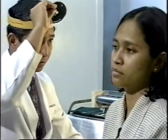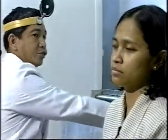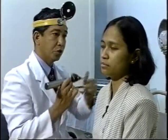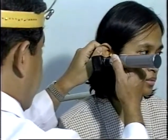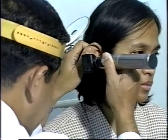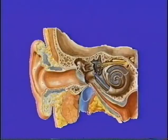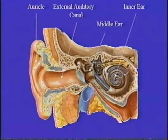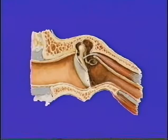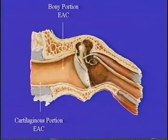After inspection of the outer portion of the ear, we proceed with inspection of the external auditory canal using the otoscope. The auricle is retracted outward, backward, and upward. The speculum of the otoscope is inserted gently, and you look for the color and any form of discharge in the external auditory canal. In some cases, you will not be able to evaluate the tympanic membrane because of the presence of cerumen, in which case you have to remove the cerumen first, so that you may fully describe and evaluate the status of the tympanic membrane.